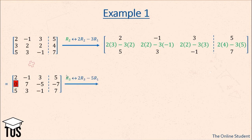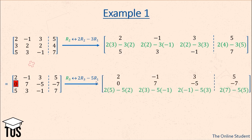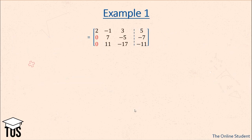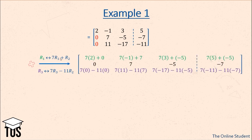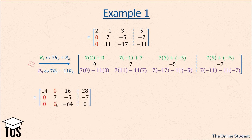Now we want the 5 in the third row to become zero as well, so we perform another row operation: the third row becomes 2 times the third row minus 5 times the first row. The first element gives 2 times 5 minus 5 times 2, which equals zero. Now we have zeros in both rows beneath the first leading element. We then perform two row operations at once: the first row becomes 7 times the first row plus the second row, and the third row becomes 7 times the third row minus 11 times the second row, giving us zeros above and below the second leading element.